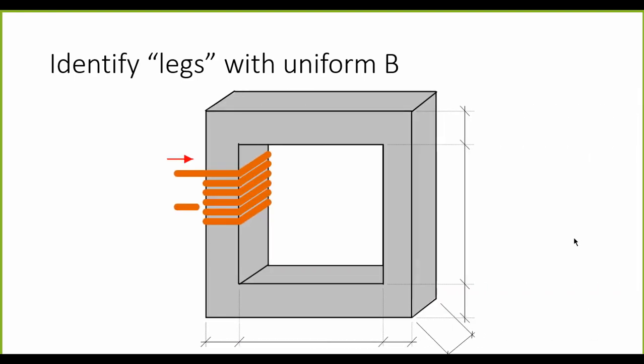The first thing we do in this method is we identify the legs of the magnetic circuit that has uniform B. In that magnetic circuit, between this point here where the mouse is and this point there right in the middle—not at the top, not here either, but right there in this diagonal—that's where the length begins.